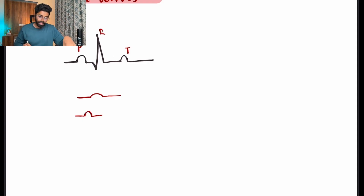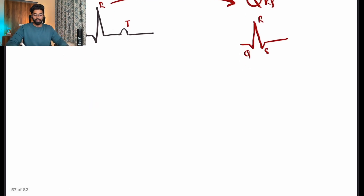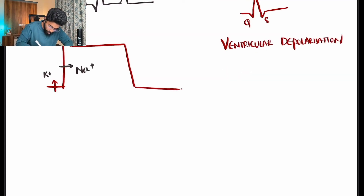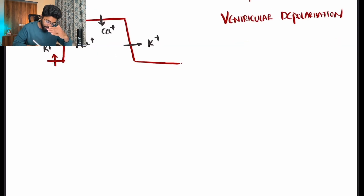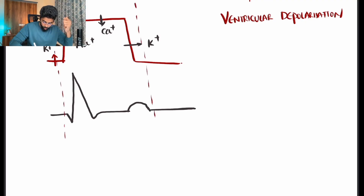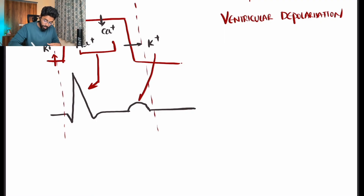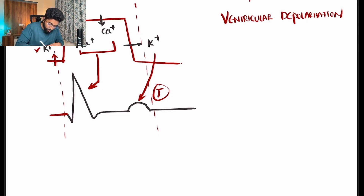The QRS complex represents ventricular depolarization. The ventricular action potential involves: potassium setting the resting potential, sodium for the rapid upstroke, inward K+ rectifiers, calcium channels, then potassium channels again. Sodium and calcium are responsible for ventricular depolarization forming the QRS, while potassium is responsible for the T wave.